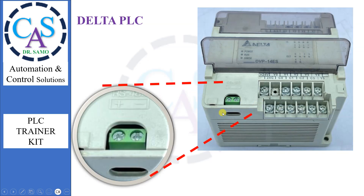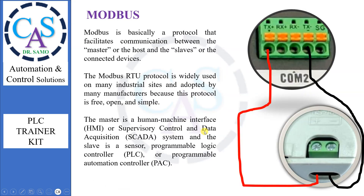PLC Modbus Port: The Delta PLC-14ES has one Modbus Protocol port, which will be used for RS-485 communication. Here, two wires are also required for the communication connection.